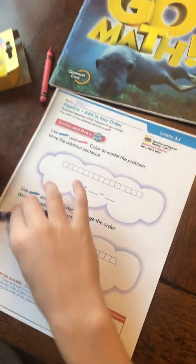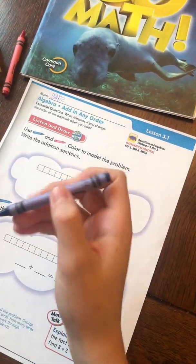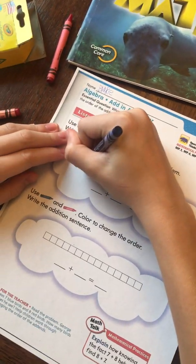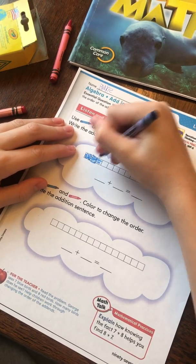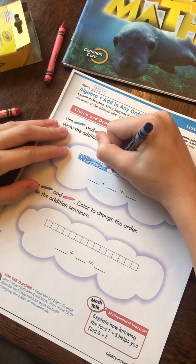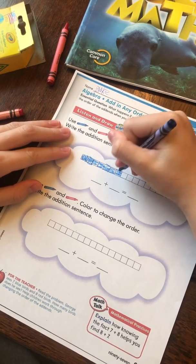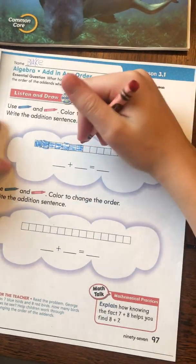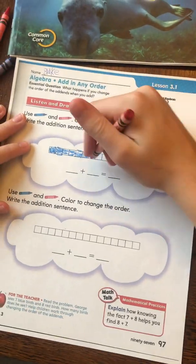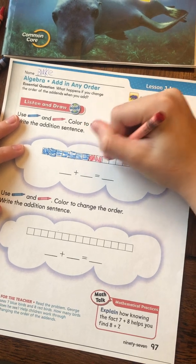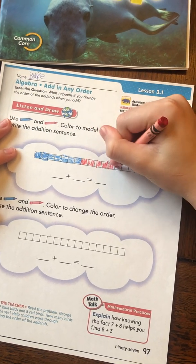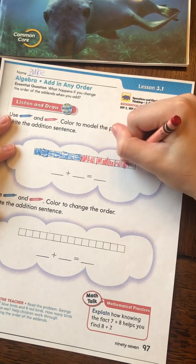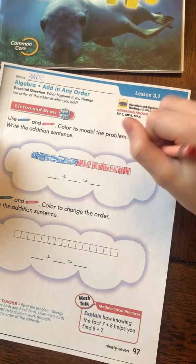So, George sees 7 blue birds, so let's color in 7 boxes. One, two, three, four, five, six, seven. Okay, so now let's... There's 8 red birds, so let's color in 8 red boxes. One, two, three, four, five, six, seven, eight.